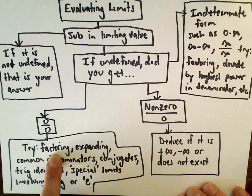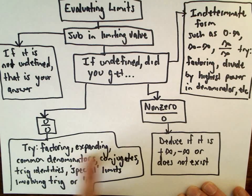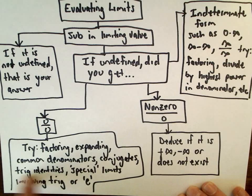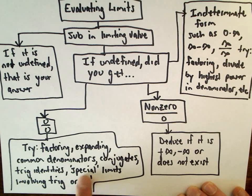You may try factoring, for example, if it's a polynomial or rational function. You may try multiplying things out. If there's fractions involved, you may get a common denominator. You may multiply by a conjugate. You may have to use trig identities. And there may be special limits involving either trig or the number e.